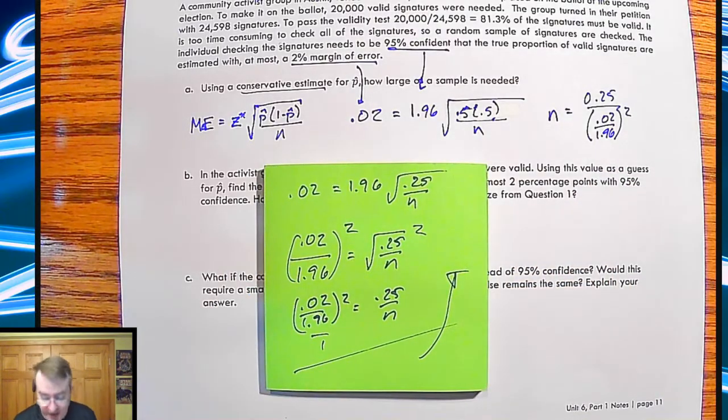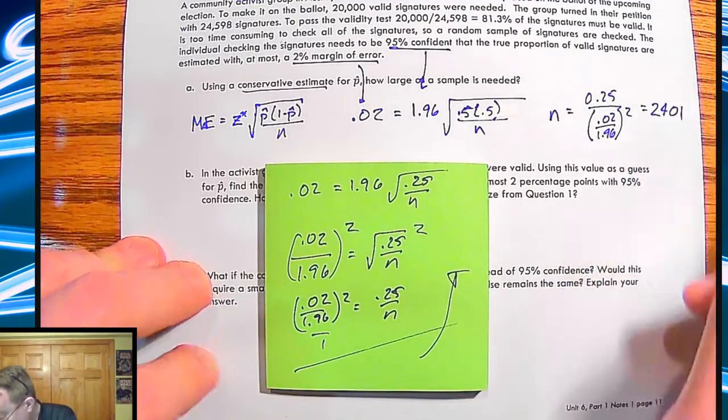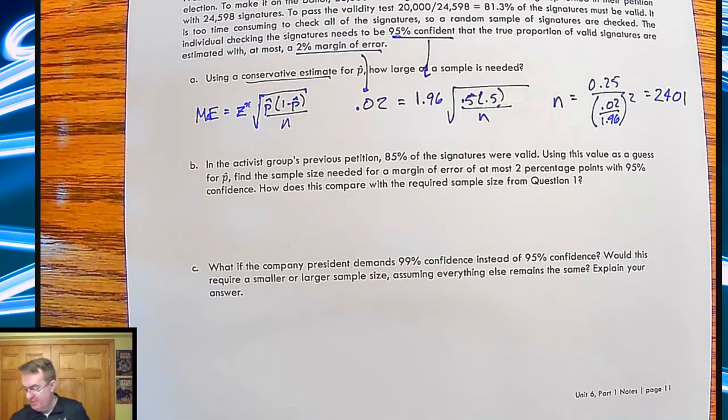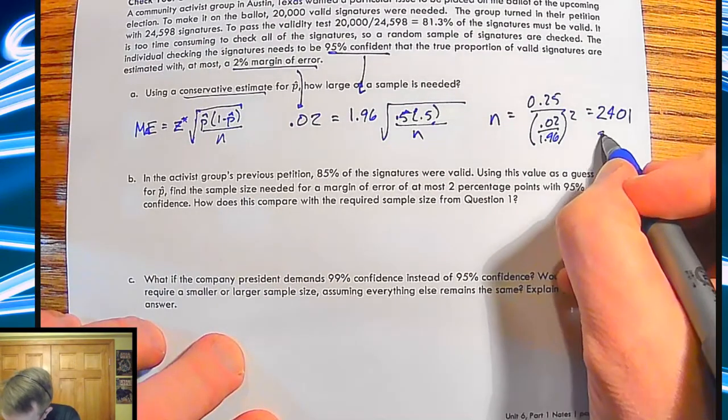So we get N out of the denominator. Easiest thing to do is treat this as one big number and put that over 1. So when I swap those two, you end up getting N is equal to this 0.25 divided by this side over here. So 0.02 over 1.96 squared. And when you do all of that, you're going to come up with a number that is 2,401 signatures. So that's, you know, a lot better than checking 21 or 24,598 signatures, right?